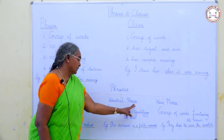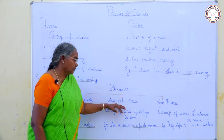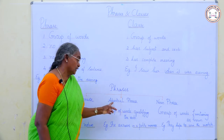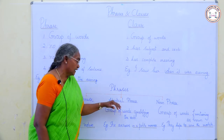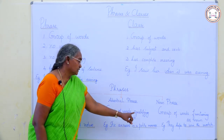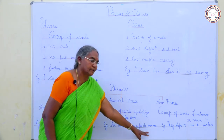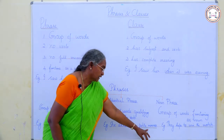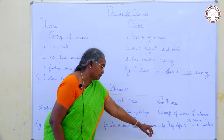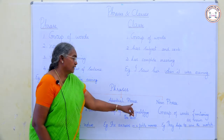Next, adverbial phrase. You all know what an adverb is — a word which qualifies a verb is called an adverb. So, a group of words qualifying the verb is called an adverbial phrase. Example: 'She answers in a polite manner.' How she answers? She answers politely — 'in a polite manner' is the adverbial phrase.